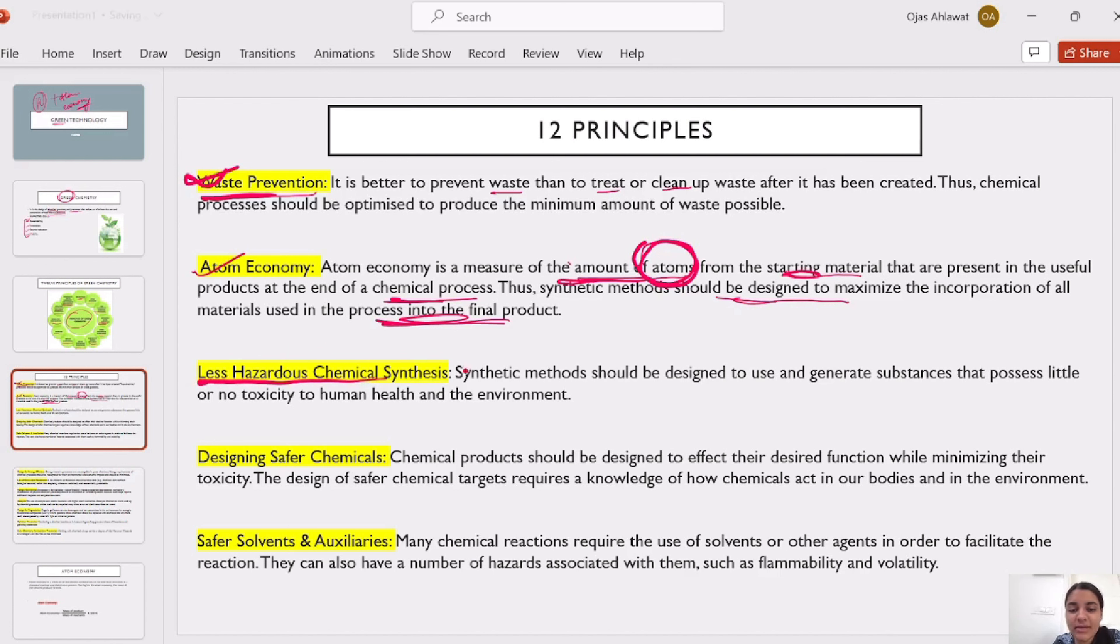Less hazardous chemical synthesis should be designed in this way that the human health environment in less and less, less or no toxicity in the human health environment can be reduced to toxic chemicals. Safer chemicals can be made, so many chemical reactions can be used to facilitate other agents' reactions. In which we use the rate and speed, so many hazardous substances can be used to avoid it.